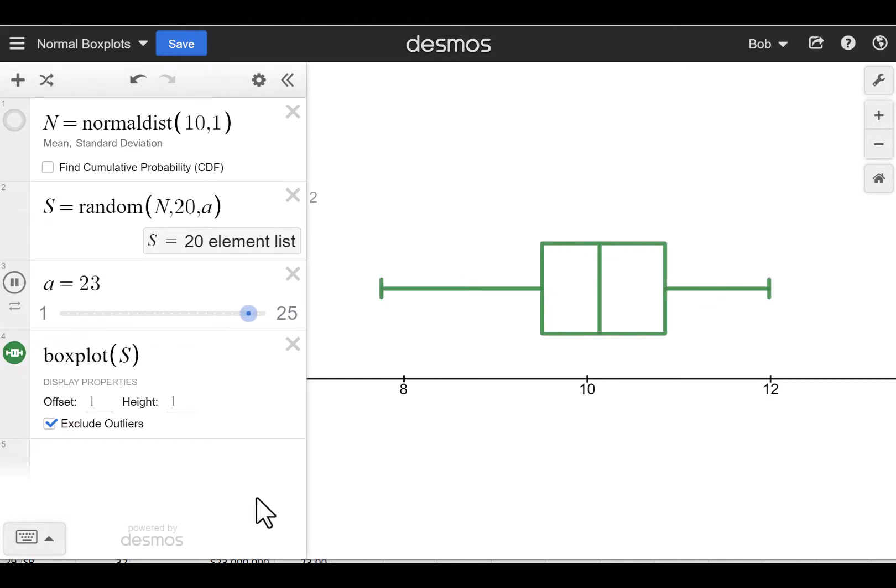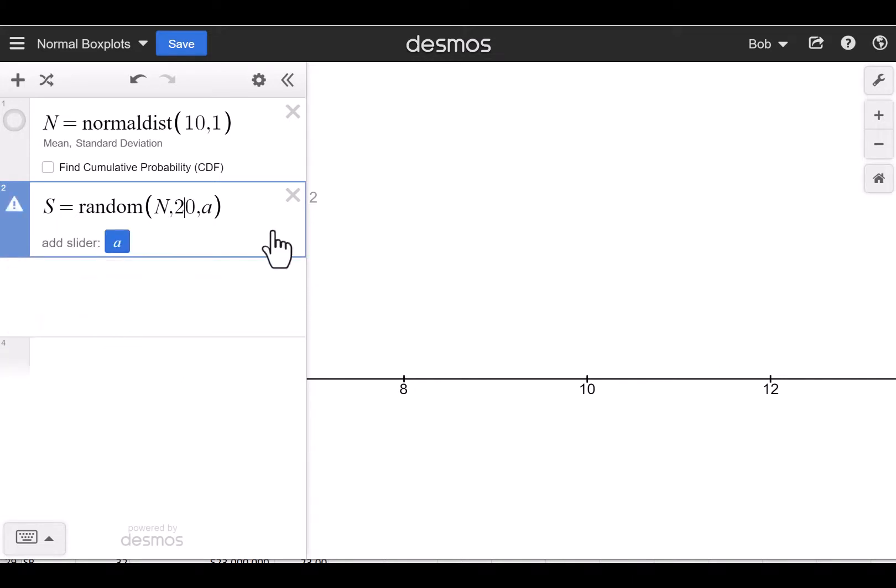Well I'll give you the big reveal here if I turn on the expressions list. Every single one of these box plots comes from a large population. If you look at my line one here I've defined a normal distribution, N equals normaldist, with a mean of 10 and a standard deviation of 1. And then what I did is I drew a random sample from that population. I called it S, a random sample drawn from my population N with a sample size of 20.